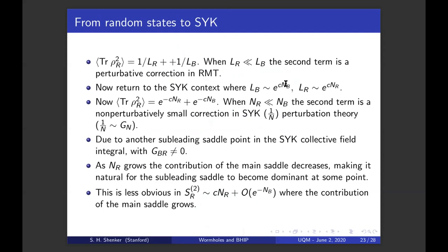But now let's return to the SYK context. And remember that LB is exponential in NB and LR is exponential in NR. So trace rho squared is e to the minus NR plus e to the minus NB. When NR is much less than NB, this is exponentially smaller than this term. It's invisible in SYK perturbation theory. It's non-perturbative. So we know the lesson here. We look for another subleading saddle point in the SYK collective field integral. And here we need the collective field that connects B and R to be not zero. That's what the diagrams do. Now, what happens when the radiation Hilbert space gets bigger? The contribution of this main saddle, let's call it the Hawking saddle, decreases. It's e to the minus NR. And so it's natural that this saddle could start dominating. So that's a natural interchange of dominance.